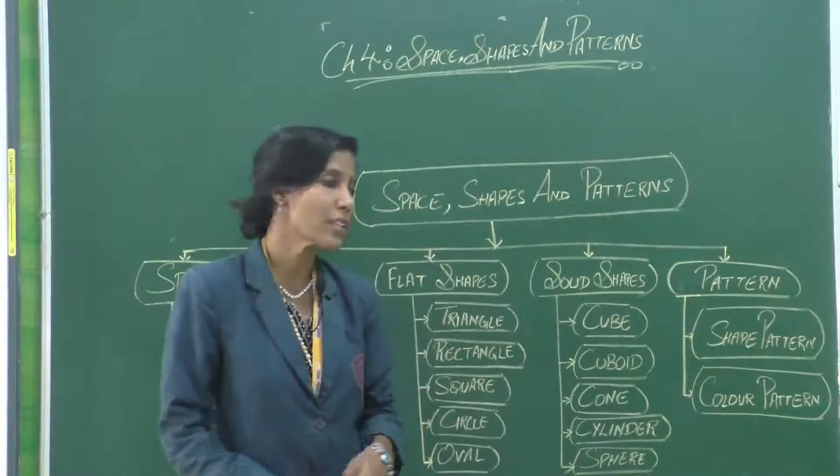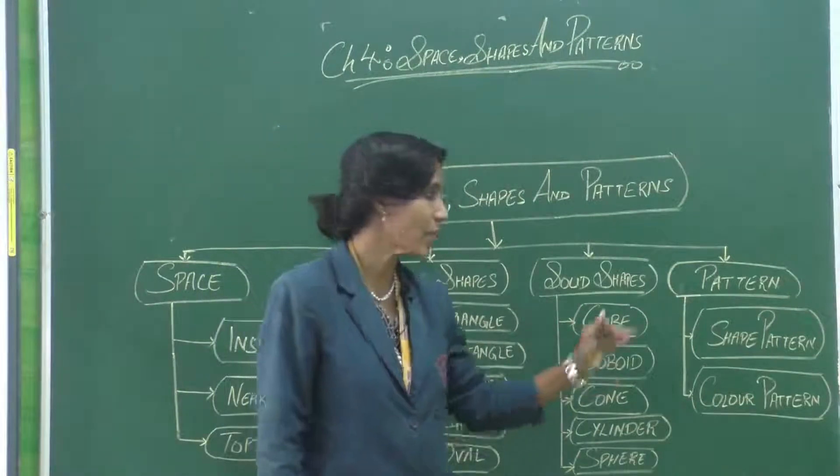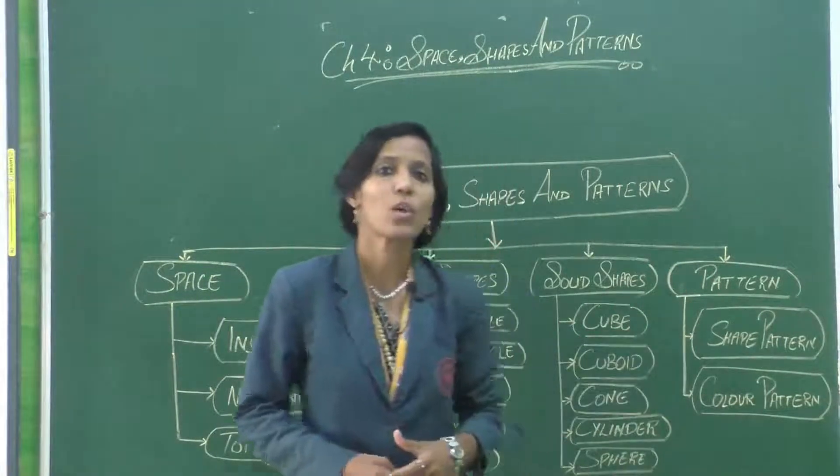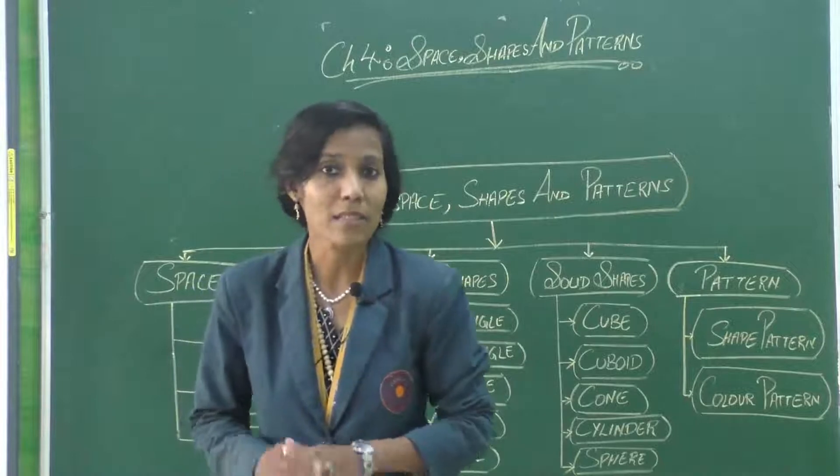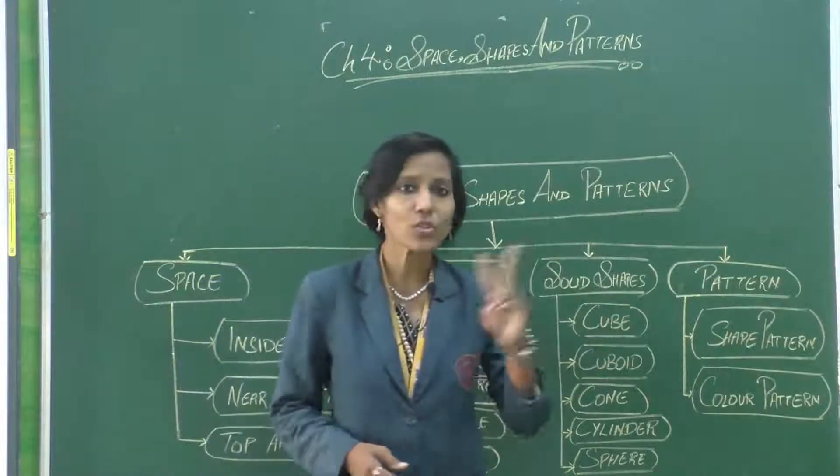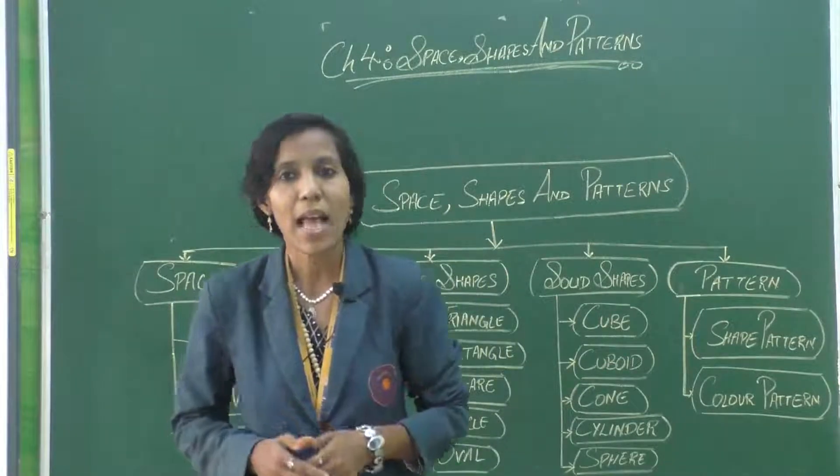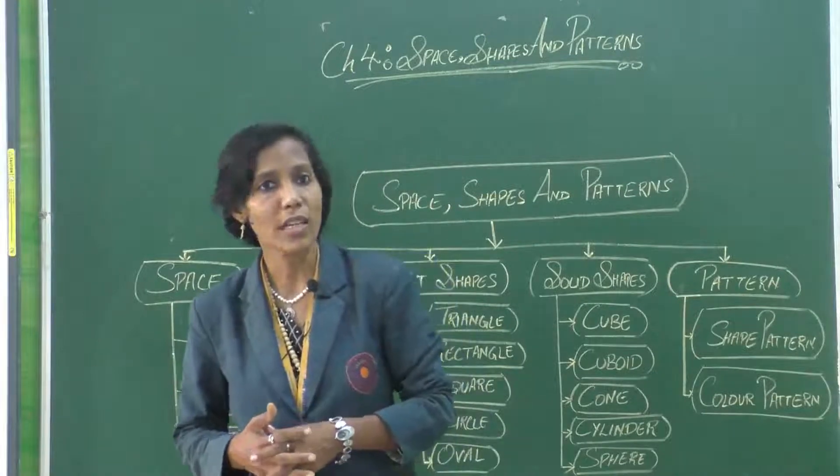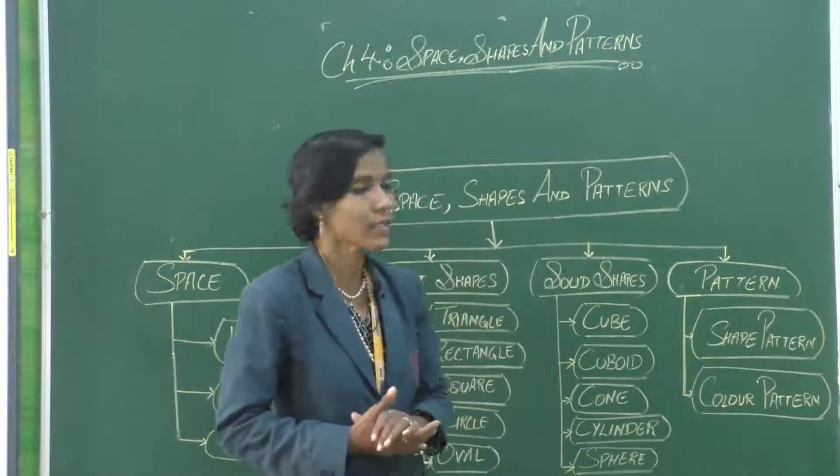Then patterns. We learnt about patterns. We learnt two types: one was for shape and another one was for color. So this was all under this chapter.